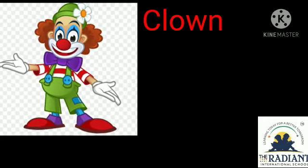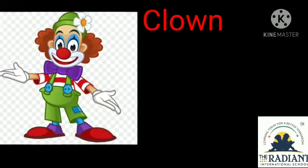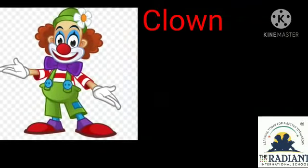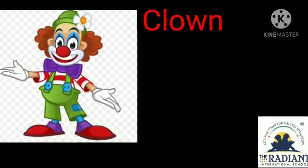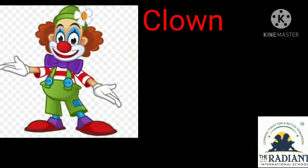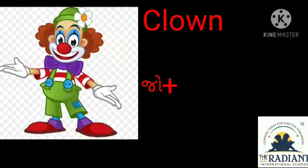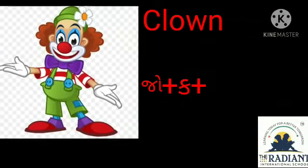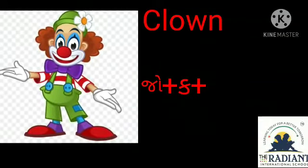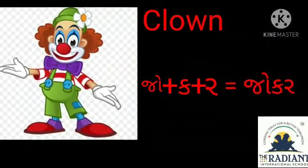Now look here, what is this? A clown। Clown को बोलते हैं जोकर। तो जोकर शब्द लिखने के लिए हम यूज़ करेंगे — ज को ओ की मात्रा, प्लस क (कबूतर का क), प्लस र। जोकर।